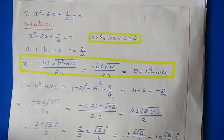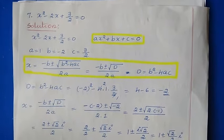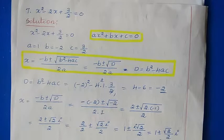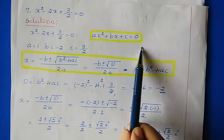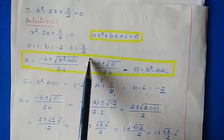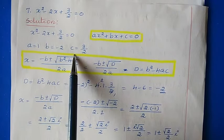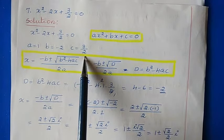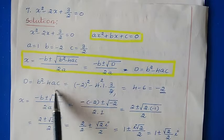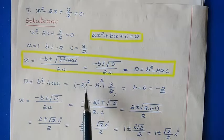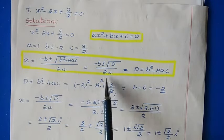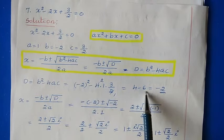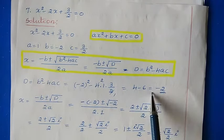Problem 7: x² - 2x + 3/2 = 0. Compare with ax² + bx + c = 0 to find a = 1, b = -2, and c = 3/2. Now find the discriminant d = b² - 4ac = (-2)² - 4 × 1 × (3/2) = 4 - 6 = -2. The discriminant is negative, so we have the complex number case again.